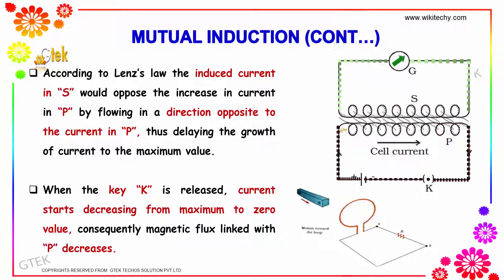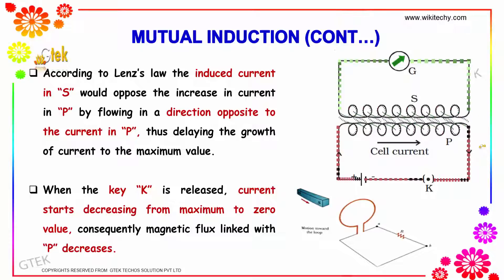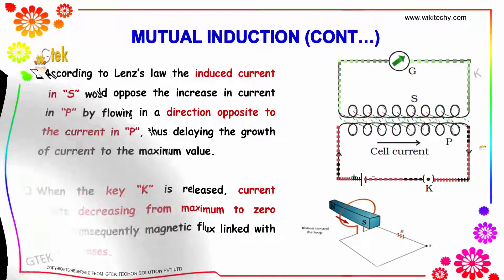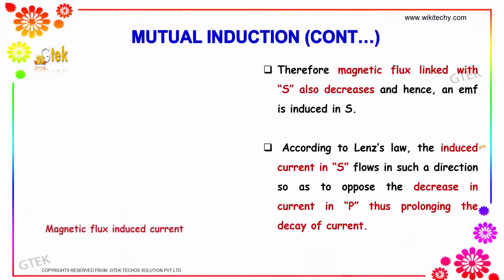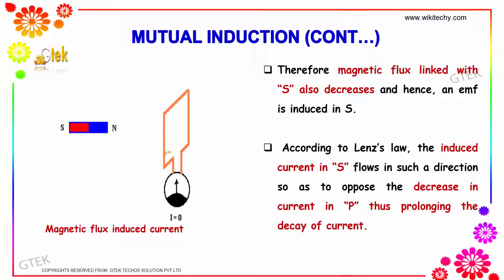This delays the growth of current to its maximum value. When the key K is released, the current decreases from maximum to zero. Consequently, the magnetic flux linked with P is reduced, and therefore the magnetic flux linked with S also decreases, inducing an EMF in S.